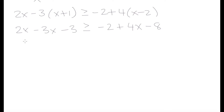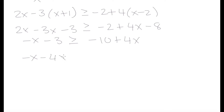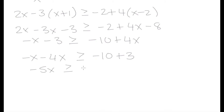On the right side we have minus 2, plus 4 times x which is 4x, and 4 times minus 2 which is negative 8. Simplifying both sides: 2x minus 3x is minus x, minus 3, greater than or equal to. On the right, minus 2 minus 8 is minus 10 plus 4x. Now let's keep our constants on one side and variables on the other, bringing 4x to the left as minus 4x and minus 3 to the right as plus 3.